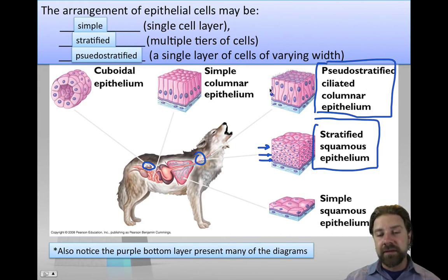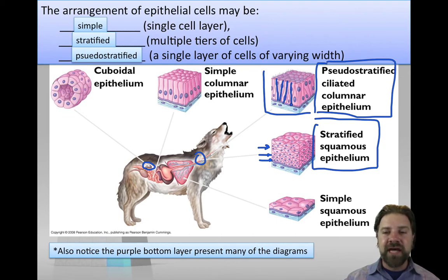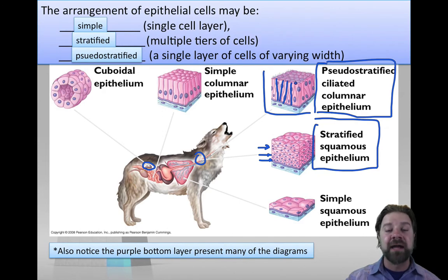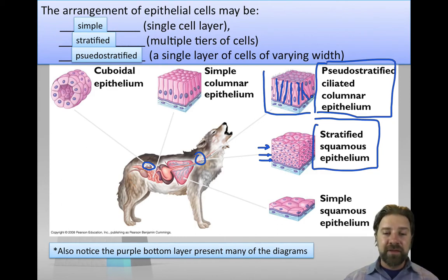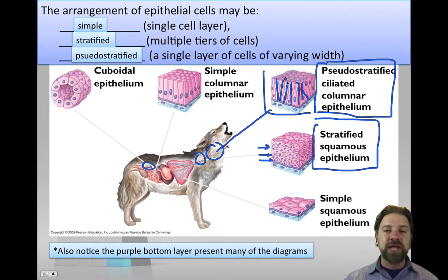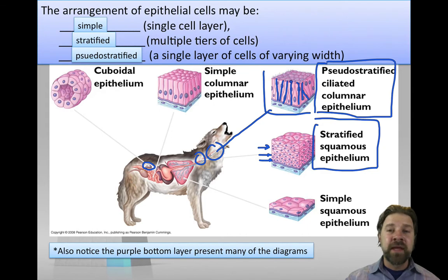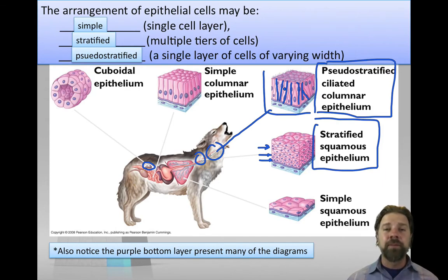Pseudostratified ciliated columnar epithelium lines the wolf's trachea. All cells span from the bottom to the top even if their shapes are irregular — they may appear to form multiple layers but do not. The cilia on the surface sweep out debris: these cells also secrete mucus, and the cilia sweep any debris that enters the trachea so the wolf can cough it up and protect its respiratory system.